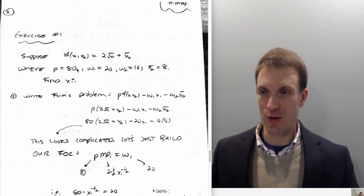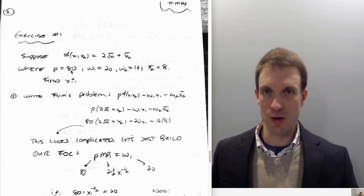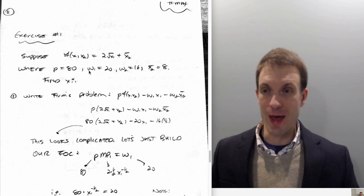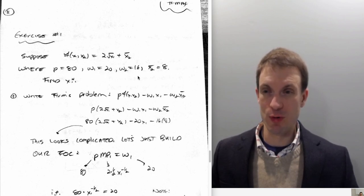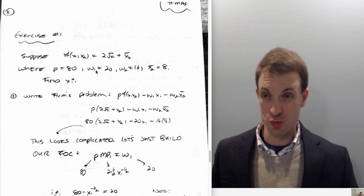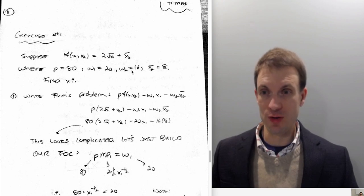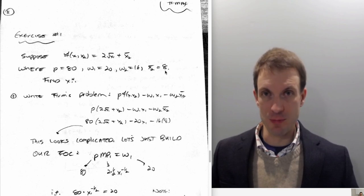P is equal to 80 — P is my output price, the price of the output good in its market. Omega 1 is going to be the price of input 1, omega 2 is going to be the price of input 2. So 20 for input 1, 16 for input 2. And we're fixing the level of input 2 at 8.